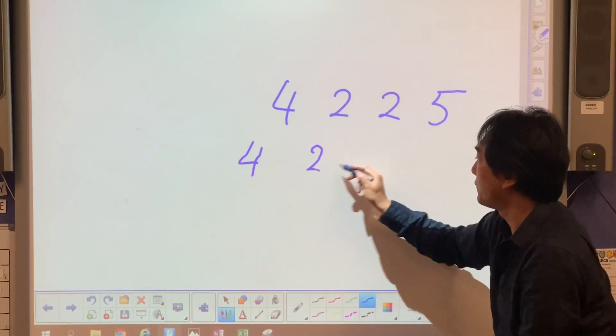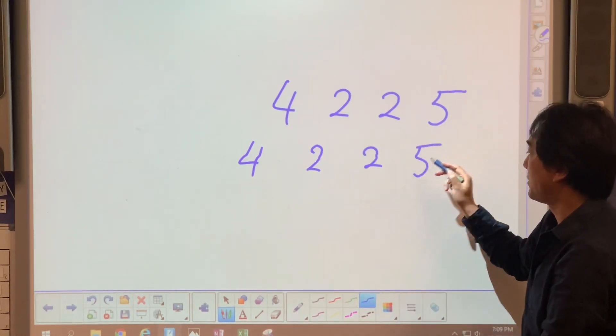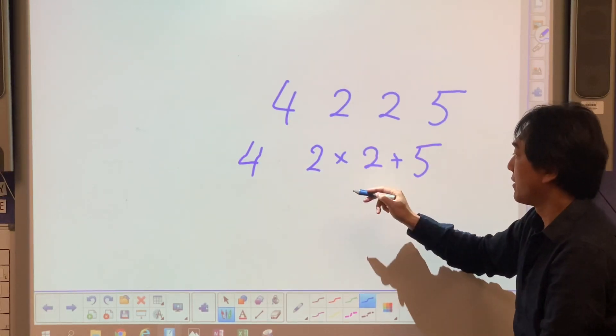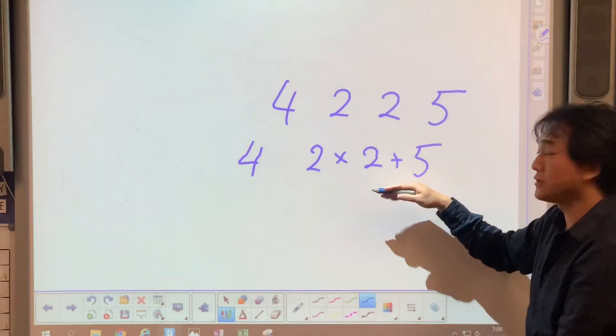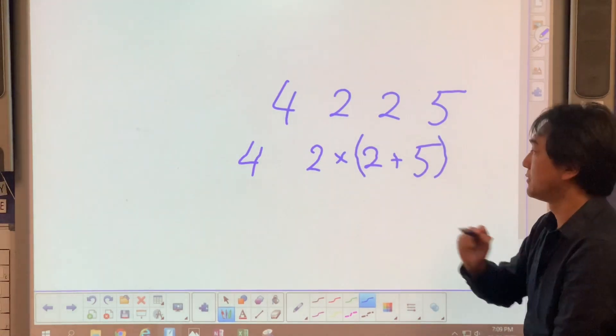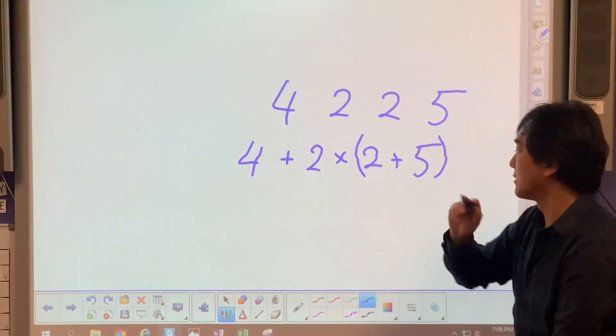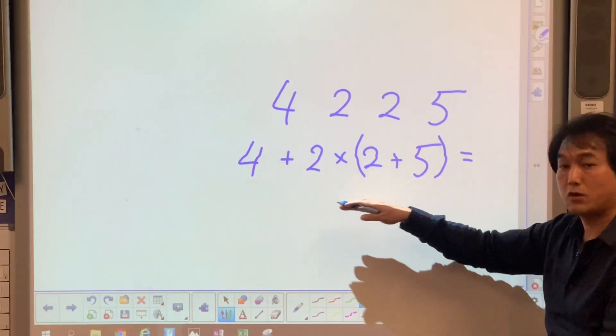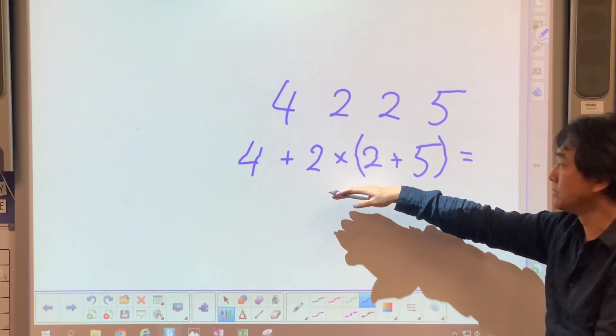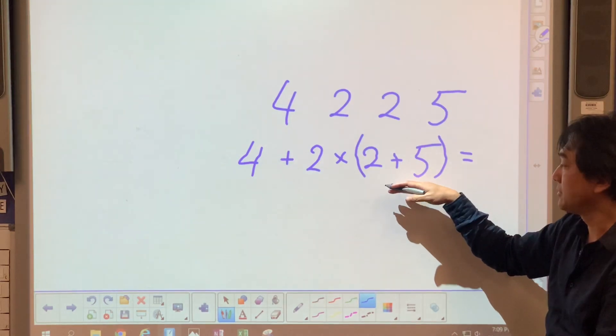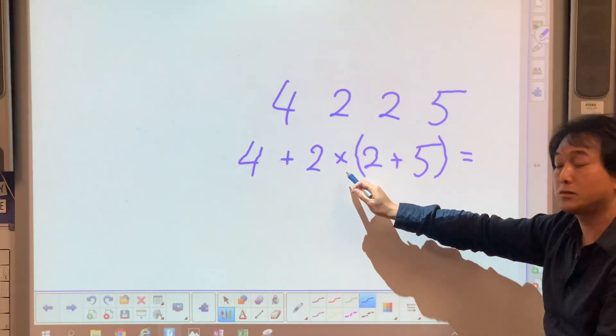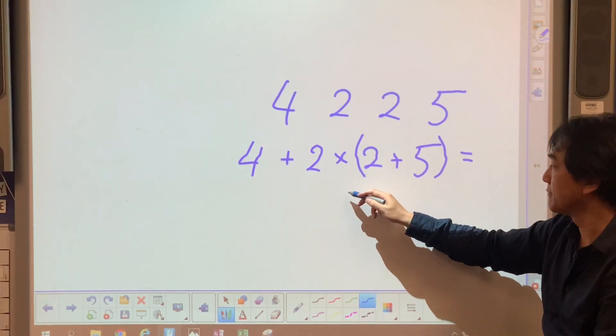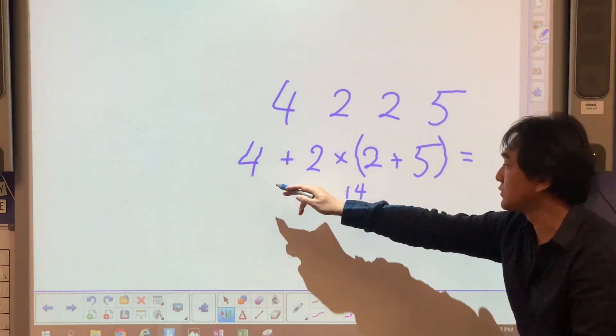I'm going to add these together and multiply. If I want to have seven first, you have to put them in the bracket. Now do you know the order of operation? That's seven, and you have to do multiplication first before addition. Two times seven is fourteen, plus four is eighteen.